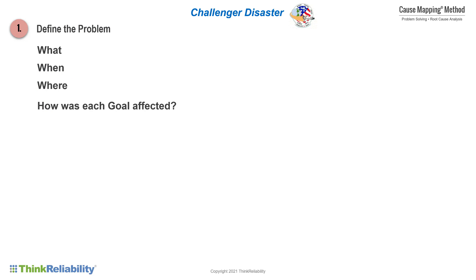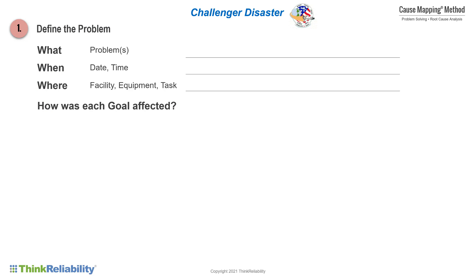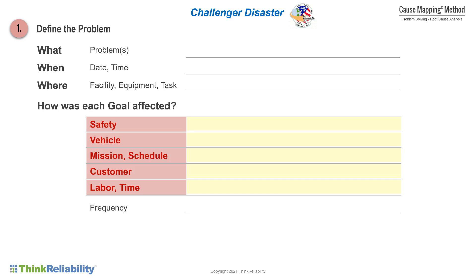The problem definition has four basic questions: What is the problem? When did it happen? Where did it happen? And how is each goal affected, along with the frequency?